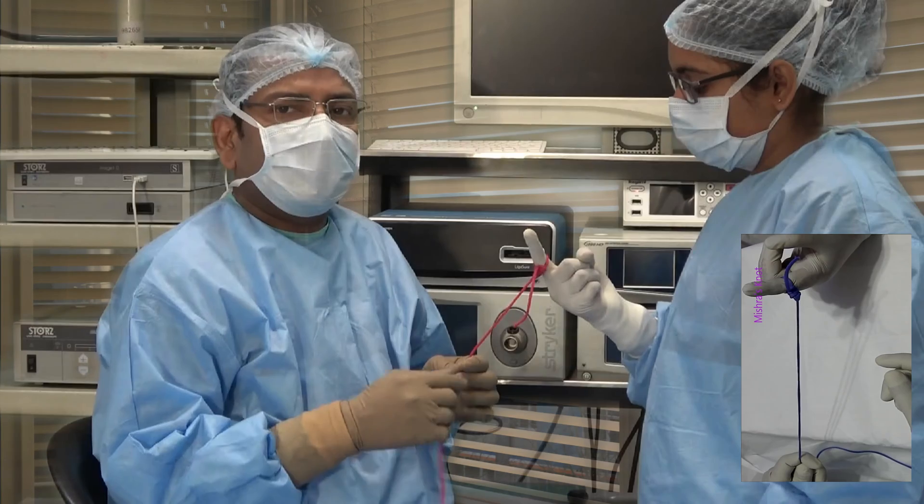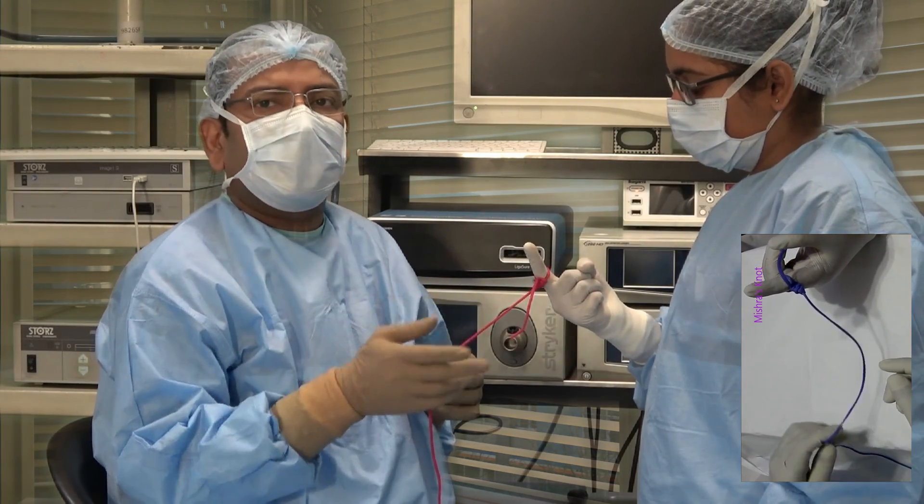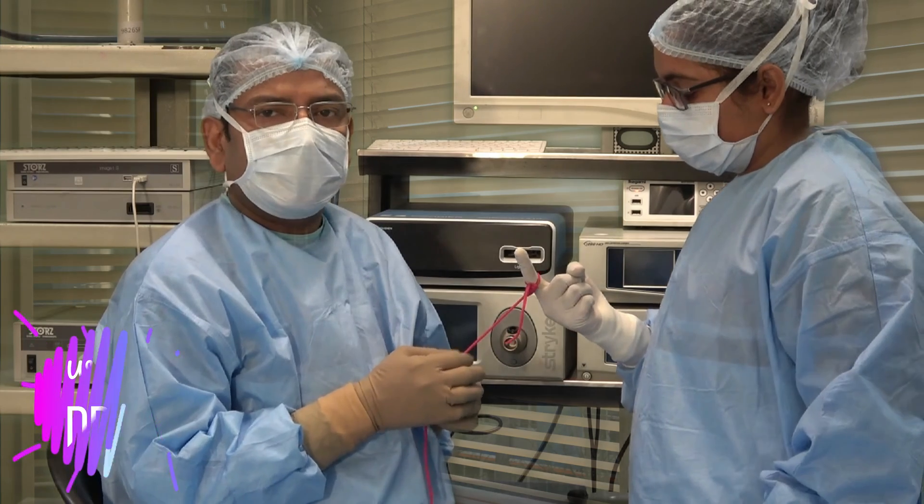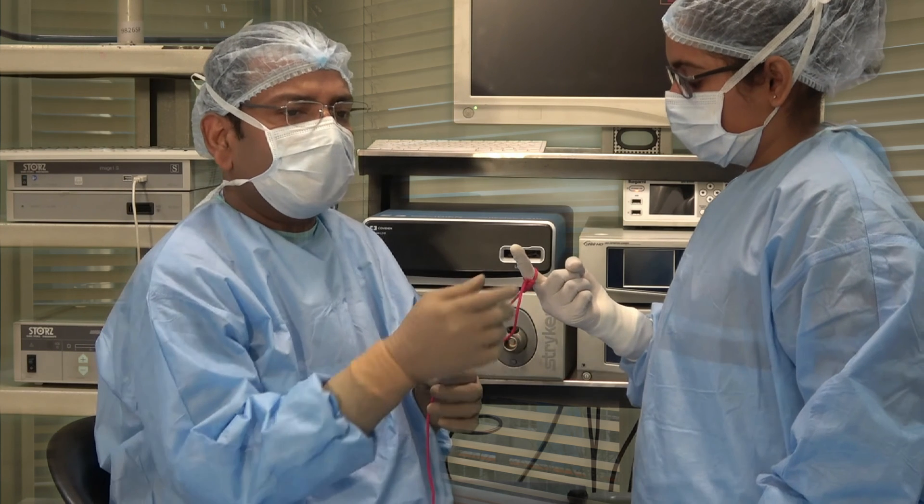So thank you very much for watching this video. This was extracorporeal Misra's knot, a useful knot up to 18 millimeters of the diameter of tubular structures. Thank you very much. Have a nice day.